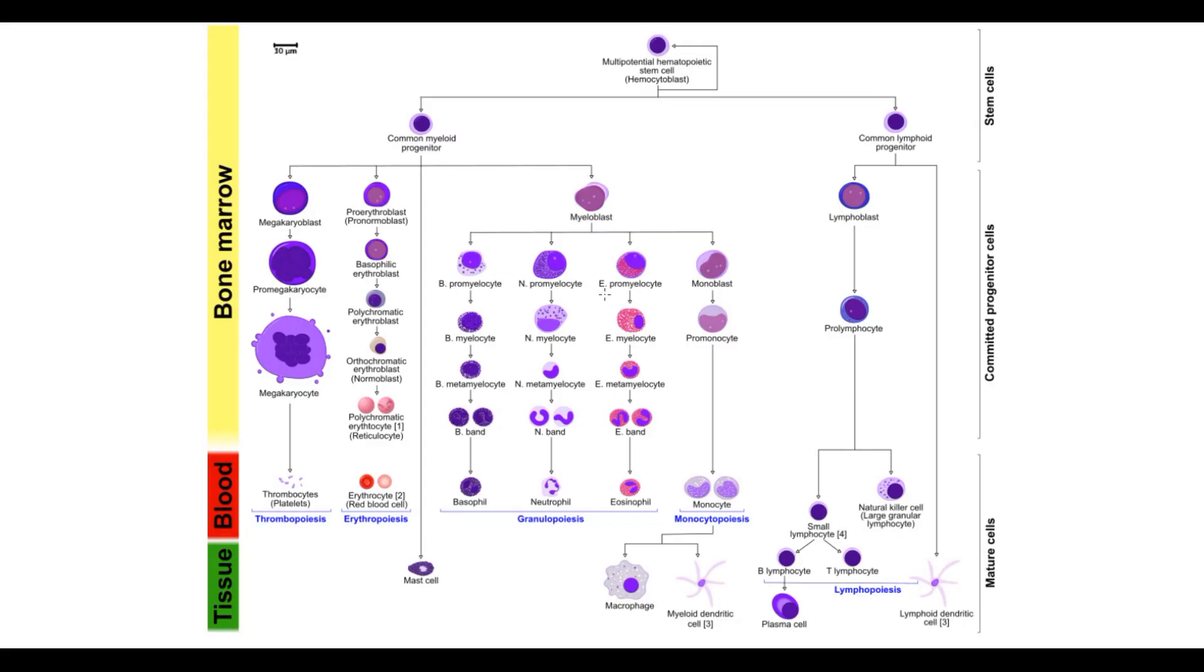Recall that all blood cells in our body come from stem cells. For example, to produce mature red blood cells, stem cells undergo differentiation into common myeloid progenitor cells, then progenitor cells become erythroblasts, and erythroblasts mature initially into reticulocytes and then into erythrocytes, which we call red blood cells. The process of heme synthesis occurs at the erythroblast stage, so when we're talking about heme synthesis, we mean erythroblasts.